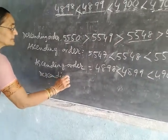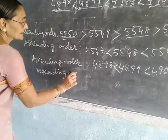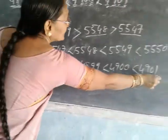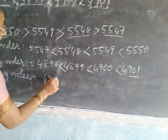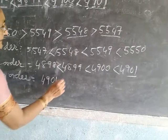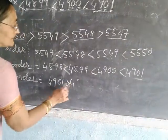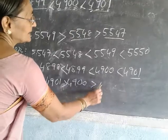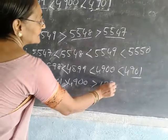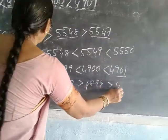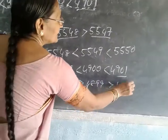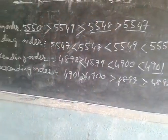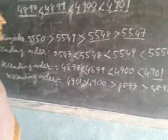Then descending order. Descending order means greater to smaller. Which one is greater? This number is greater. First you write four thousand nine hundred and one, then four thousand nine hundred, then four thousand eight hundred and ninety-nine, then four thousand eight hundred and ninety-eight. This way, descending and ascending order you have to write.